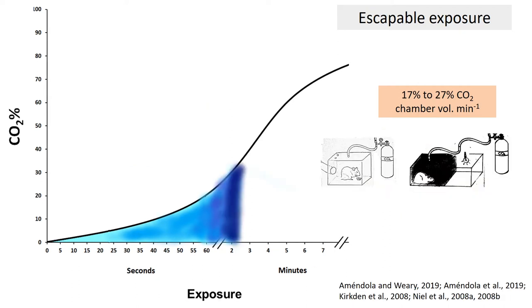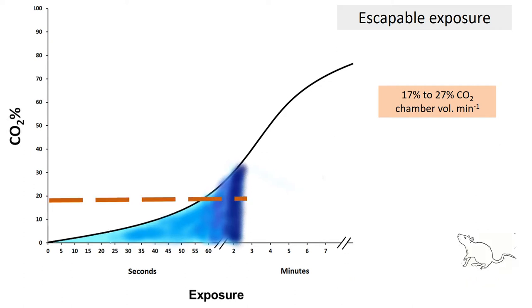When rats can avoid exposure to CO2 gradual fill, rats avoid exposure to concentrations above 18.6% CO2, even at the cost of losing a valuable sweet reward or at the cost of being exposed to an aversive bright light. Concentration that is well below those required to render the animal unconscious.